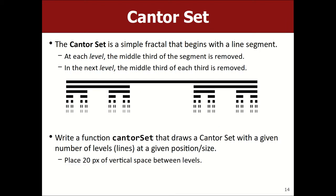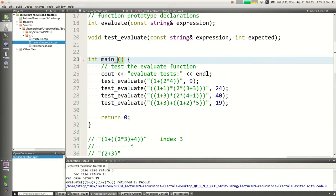Let's draw a really simple fractal called the Cantor set. It's just a pattern of horizontal lines: each level draws smaller lines — the first third and the last third of the previous level's line, with 20 pixels of vertical space between levels. Let's write a function cantorSet that takes an x,y starting position, a length, and a number of levels, and draws it. Base case: if levels is one, just draw a line from (x,y) to (x+length, y).